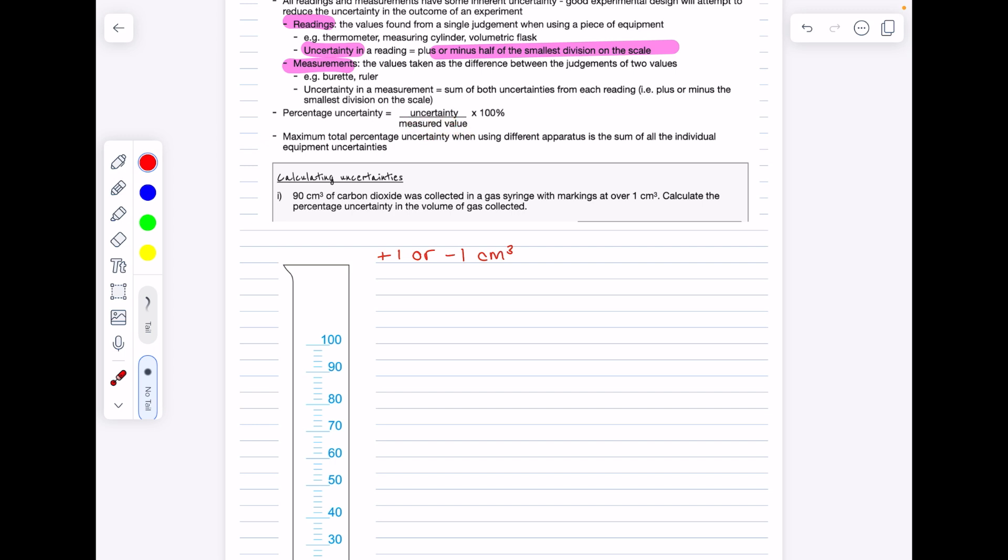The percentage uncertainty you'll commonly be asked is when you take your uncertainty divided by your measured value and you multiply it by 100. And then the maximum total percentage uncertainty when using different apparatus across an experiment is the sum of all the individual equipment uncertainties.